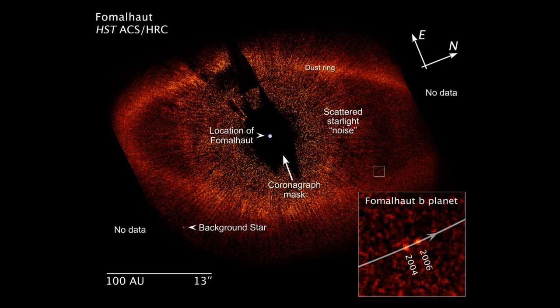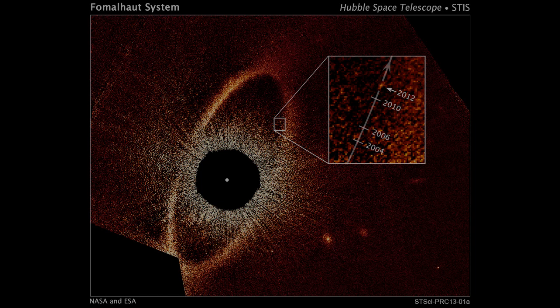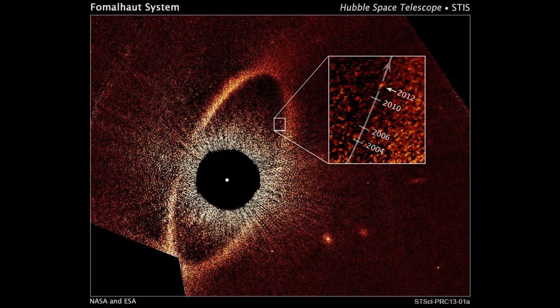Fomalhaut B could be a planet, or it could just be a very large, gravitationally bound conglomeration of debris. Whatever it is, independent teams have confirmed its existence as an object orbiting that star with a period of about 2,000 years.